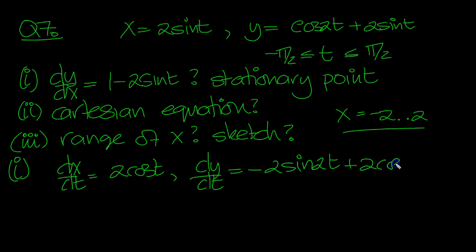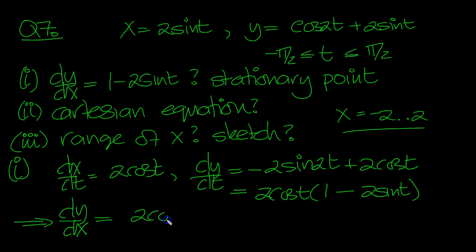Plus 2 cos t. If we take out the 2 cos t, this would be 1 minus... This is 2 sine cos, so we've got a 2 with a minus, and then just the sine t is there. So, dy/dx then is equal to 2 cos t over 2 cos t, which is 1 minus 2 sine t.